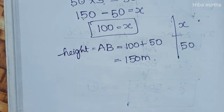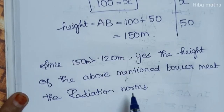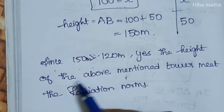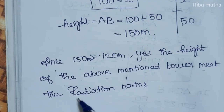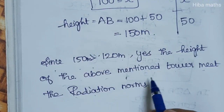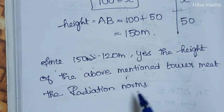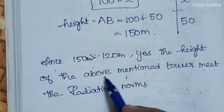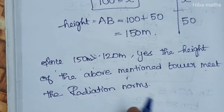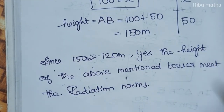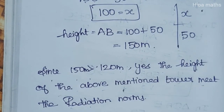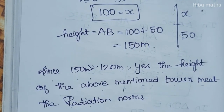So the height of the cell phone tower is 150 meters, which is greater than 120 meters. Therefore the tower meets the radiation control norms. Thank you so much.